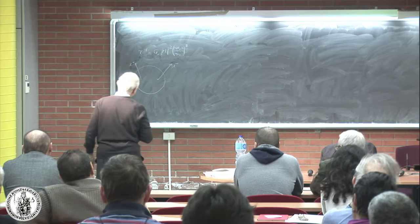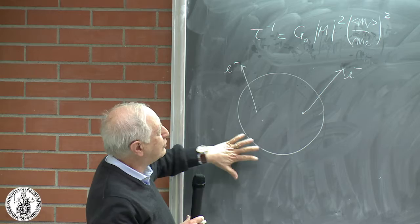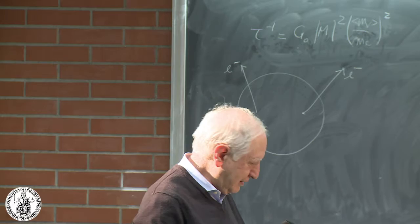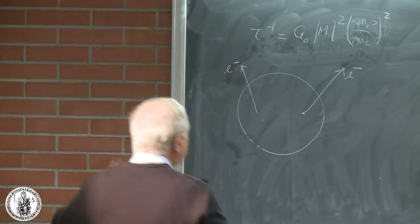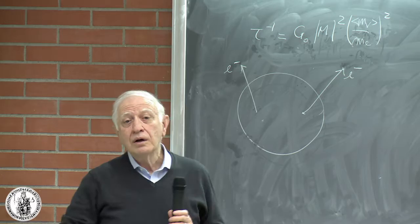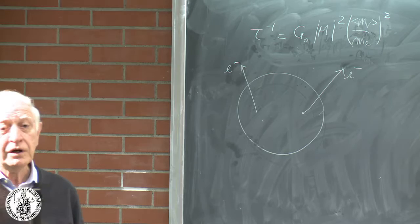The goal of the first part of this lecture is to solve the Dirac equation in the presence of these complications. In the second part, we are going to assemble everything together — this piece, this piece, and this piece — to compare with the current limits on the half-life, and therefore to give limits on neutrino masses.